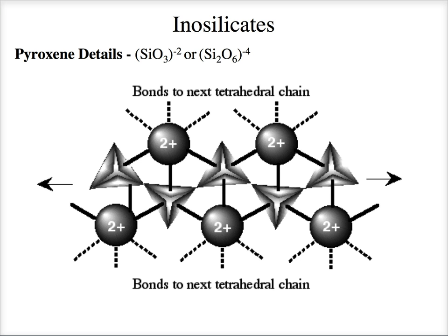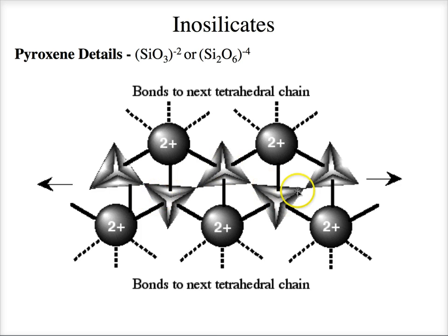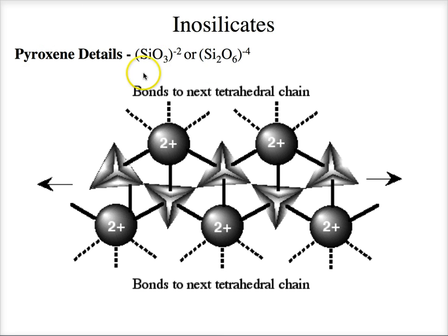In a pyroxene formula you'll always notice either SiO3 or Si2O6 — algebraically the same thing. Each oxygen is minus two, so SiO3 has a minus two charge, and Si2O6 has a minus four charge. We double it to avoid fractions. When you see that tacked onto a formula, you know it's a pyroxene. In order to balance that minus two charge you need to add cations — iron, magnesium, calcium, or a mixture.